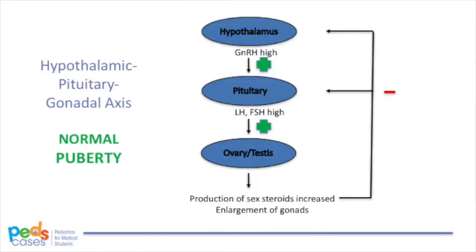To help us understand different causes of delayed puberty, let's revisit the HPG axis. In this simplified diagram of the HPG axis, all three components — the hypothalamus, pituitary, and the gonads — are functioning normally. The hypothalamus produces GnRH, the pituitary produces LH and FSH, driving increased production of sex steroids in the gonads and enlargement of the gonads. The sex steroids, in turn, keep the hypothalamus and pituitary under appropriate control through feedback inhibition.